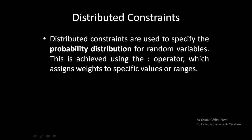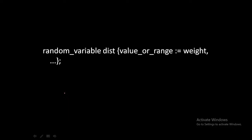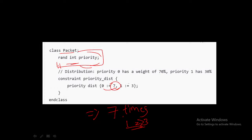This is achieved by using the colon-equal operator (`:=`). We use this colon-equal operator for achieving a distributed constraint, which assigns weights to specific values or ranges. The syntax is colon-equal followed by the weight — how many times or what should be the probability of a particular variable. So here, 0 should occur for at least 7 times and 1 for at least 3 times.